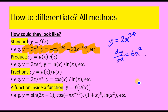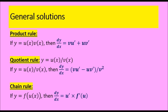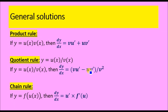In this video we're going to look at how to solve products, fractional forms, and function-within-a-function cases using specific rules. For products, we use the product rule: if y equals two functions multiplied together, the derivative is v times u prime plus u times v prime — the second times the derivative of the first, plus the first times the derivative of the second.